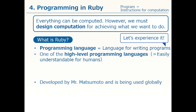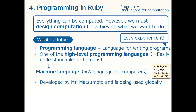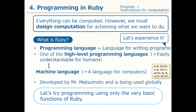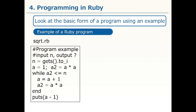Ruby is one of the high-level programming languages that are designed to be accessible for us. In contrast, a language that computers actually understand is called a machine language. We will experience programming by using a human-friendly, high-level language that is Ruby. Ruby has a variety of functions, but we will use only the simplest functions to do our programming.